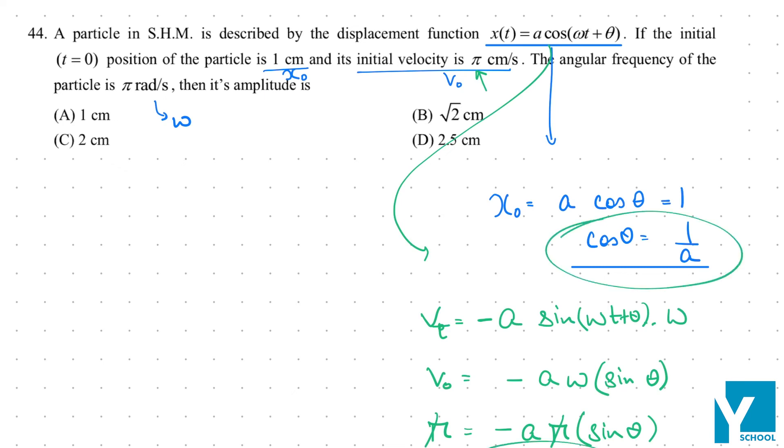Now we know cos θ and sin θ. What are we going to do? We are going to square and add. sin² θ + cos² θ equals (1/a)² plus (-1/a)². 1 equals 2 by a².